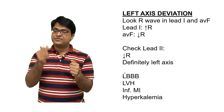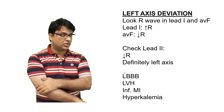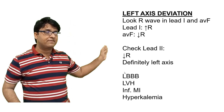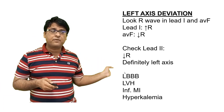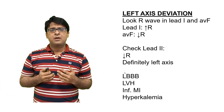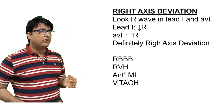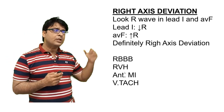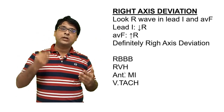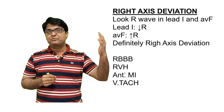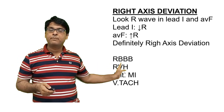Common causes of left axis deviation include left bundle branch block, left ventricular hypertrophy, and inferior wall MI, as well as hyperkalemia. For right axis deviation: if the R wave is downward in lead 1 and upward in AVF, that is right axis deviation. Common causes include right bundle branch block and right ventricular hypertrophy.